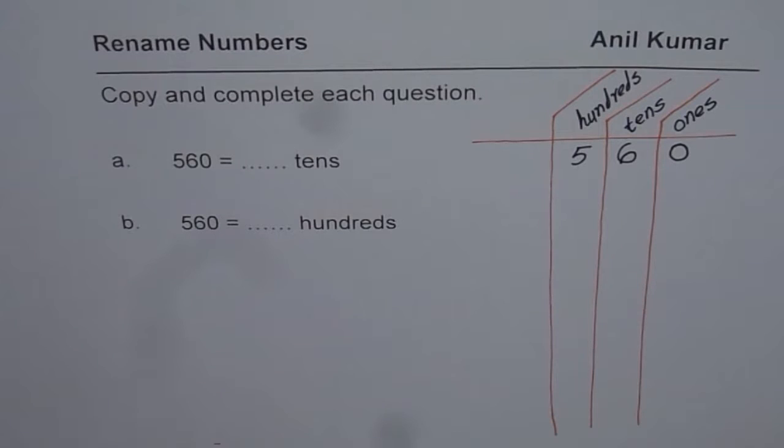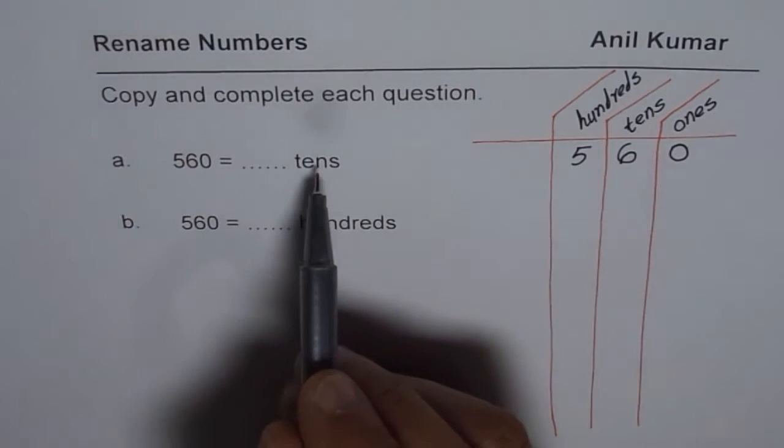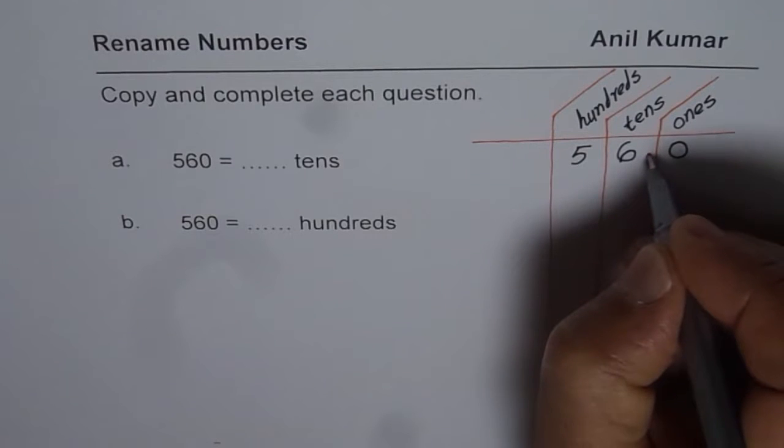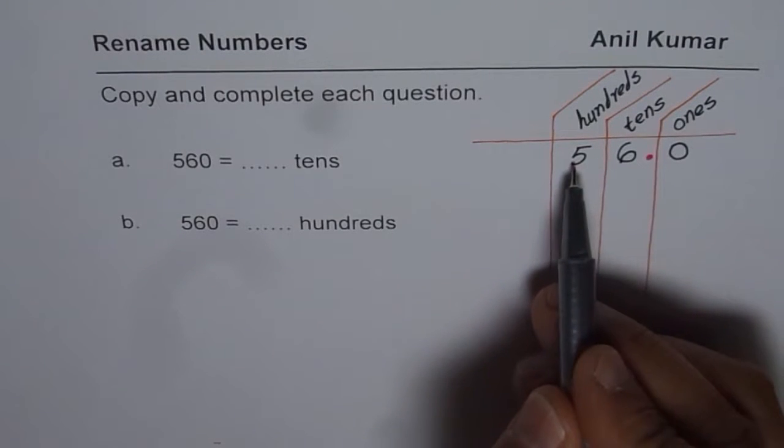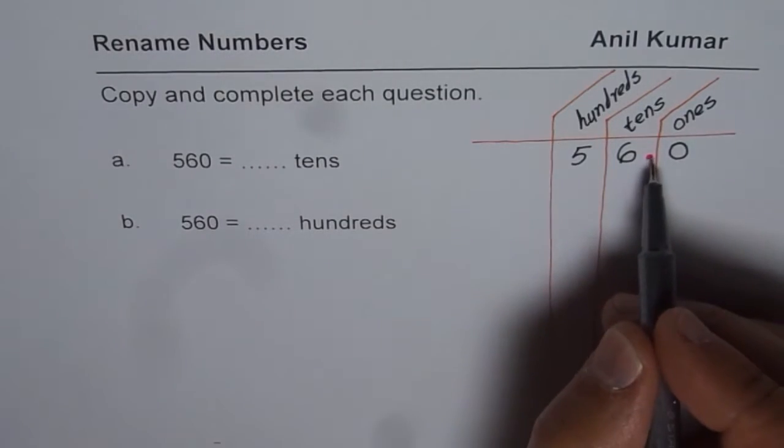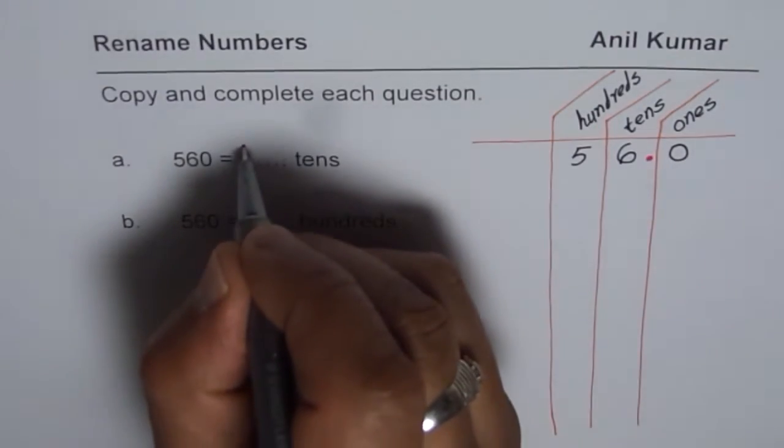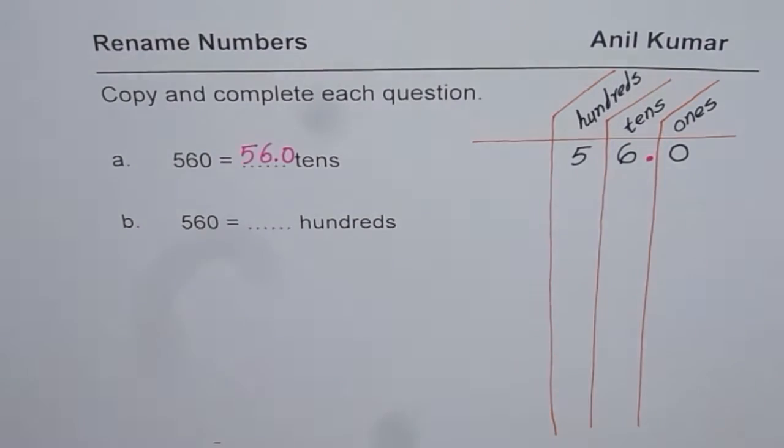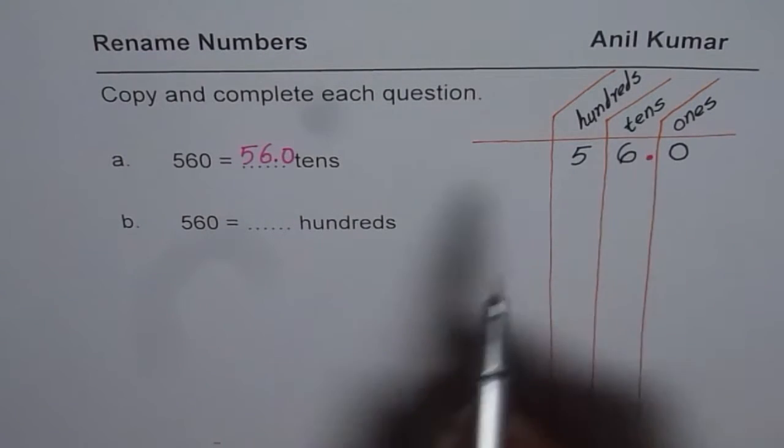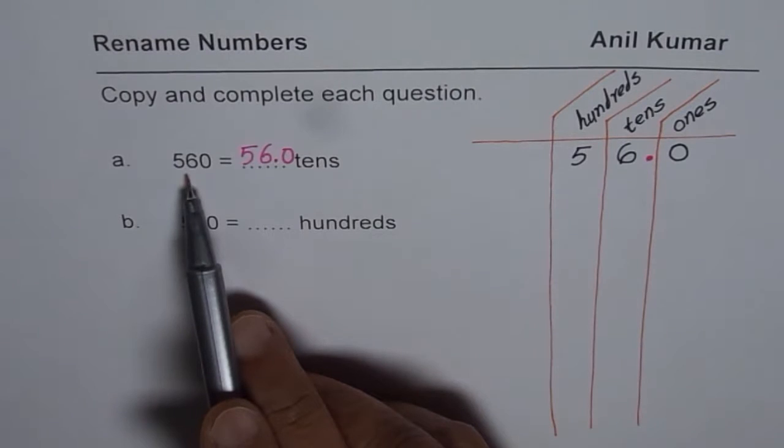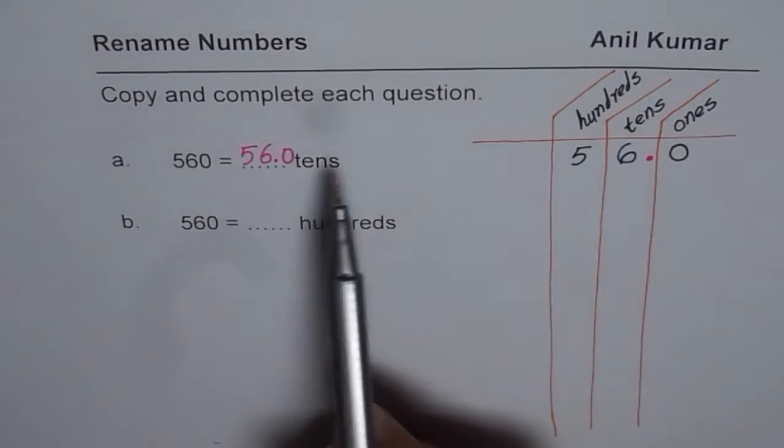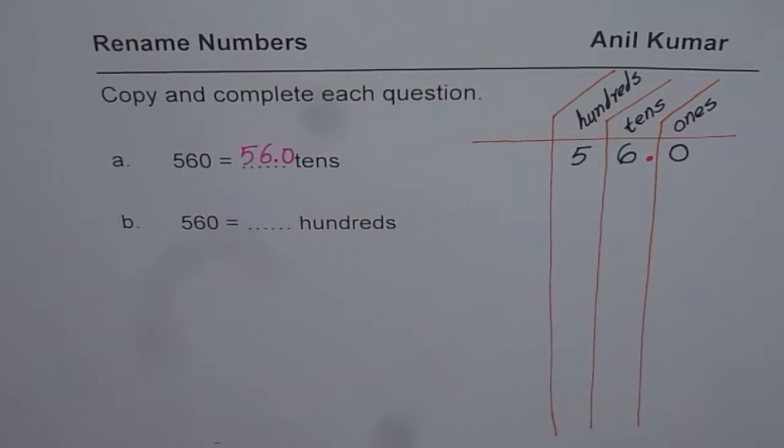Now when we say that we want to rename 560 as some number of tens, then look into the place value chart. So tens is right there, put a decimal there. So the number on the left side is what we need. We could write decimal 0 also. So it could be written as 56 decimal 0 or only 56 can also work. 56 tens is same as 560. You get an idea, so if you multiply 56 by 10, you get 560. So that is the idea.